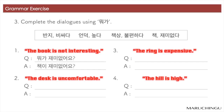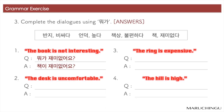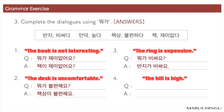Question 3: Complete the dialogue using 뭐가. 1번. 뭐가 재미없어요? 책이 재미없어요. 2번. 뭐가 불편해요? 책상이 불편해요. 3번. 뭐가 비싸요? 반지가 비싸요. 4번. 뭐가 높아요? 언덕이 높아요.